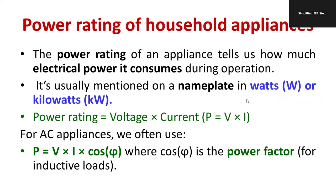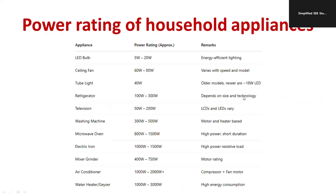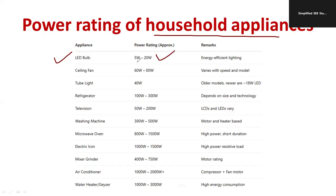Now let me show you a detailed list of power ratings for various household appliances. The first column lists the appliances, the second column shows the power rating in watts, and the third column has remarks. An LED lamp ranges from 5 watts to 20 watts — it is high-efficiency lighting. A ceiling fan ranges from 60 watts to 80 watts, varying with speed and model. A fluorescent tube light is rated at 40 watts for older models and 18 watts for newer LED models.